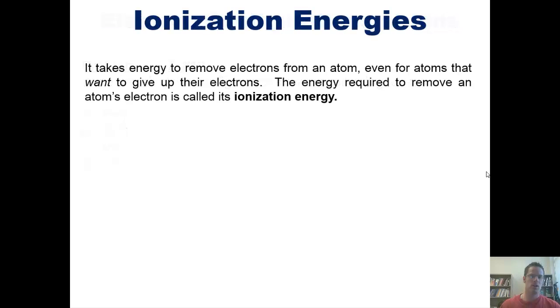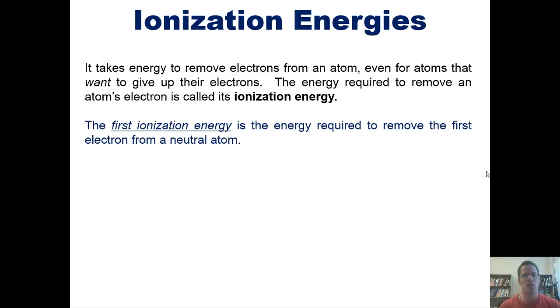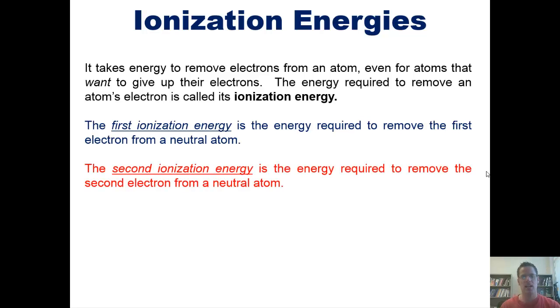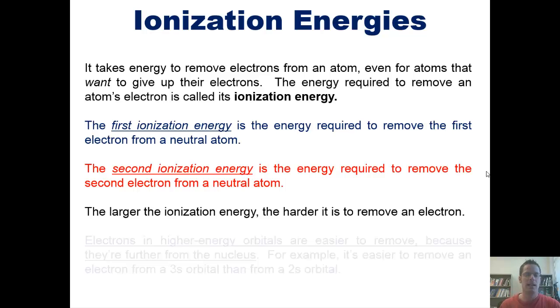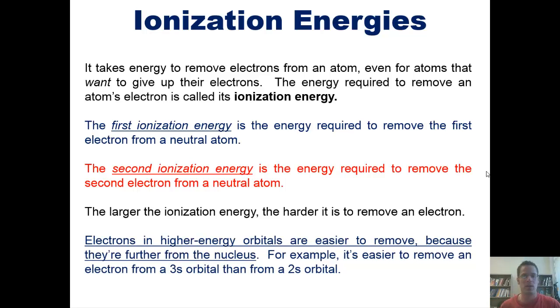I'd now like to teach you about ionization energies. As it turns out, it takes energy to remove electrons from an atom, even for atoms that want to give up their electrons. The energy required to remove an atom's electron is called its ionization energy. The first ionization energy is the energy required to remove the first electron from a neutral atom. The second ionization energy is the energy required to remove a second electron from an atom. The larger the ionization energy, the harder it is to remove an electron. Electrons in higher energy orbitals, by the way, are further from the nucleus, so they're easier to remove. For example, it's easier to remove an electron from a 3s orbital than from a 2s orbital, because a 3s orbital electron is further away from the protons in the nucleus than a 2s orbital.